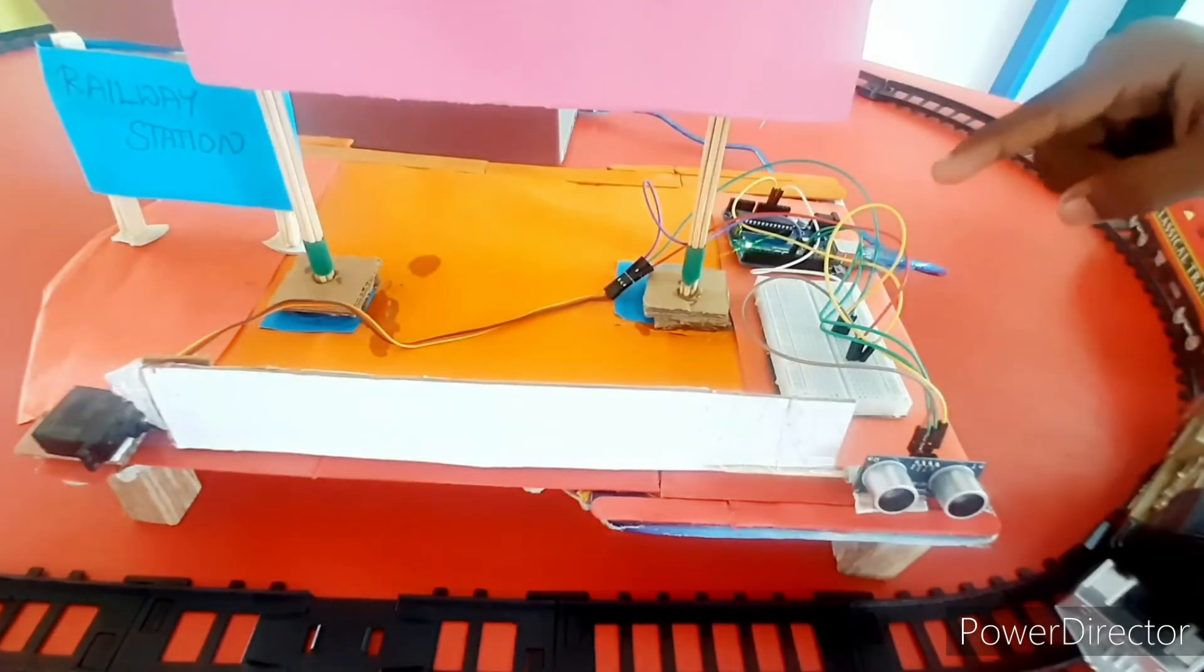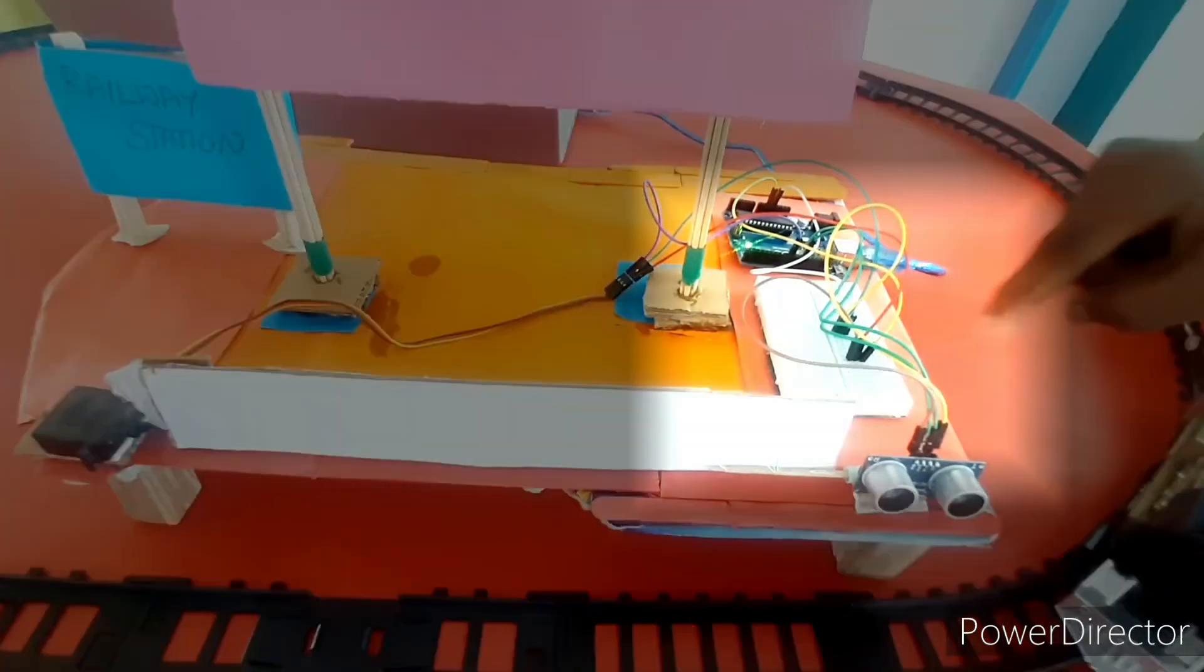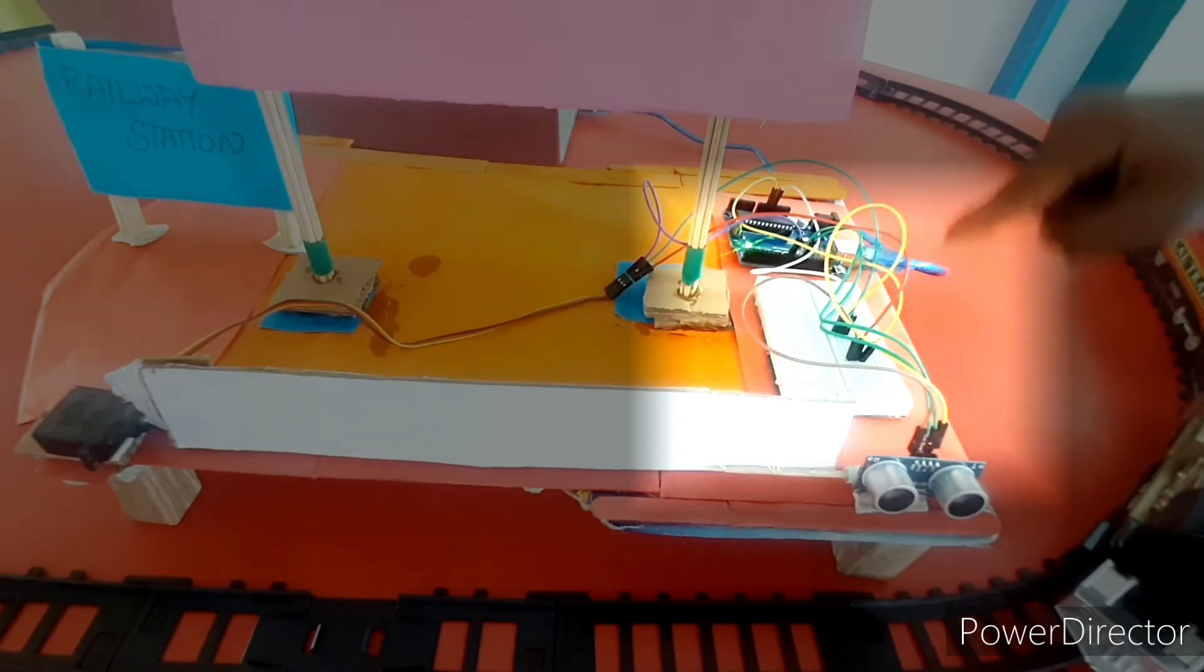Jumper wires. Jumper wires are used to connect all the components together. Breadboard. Breadboard is used to connect multiple components in it.